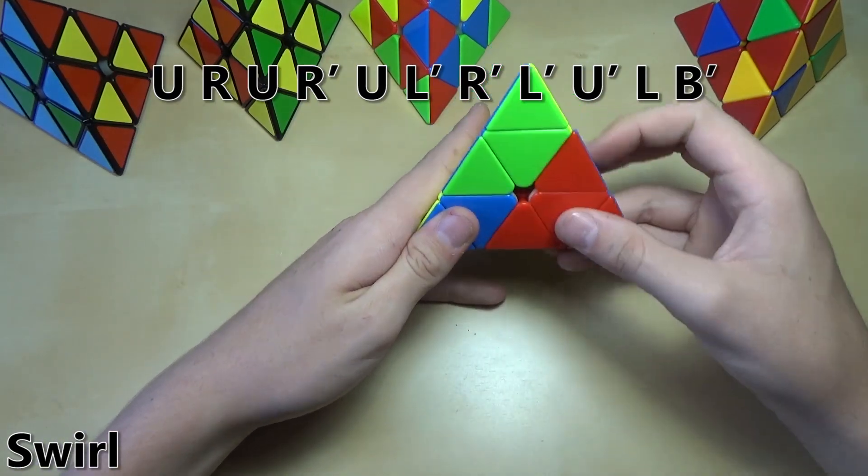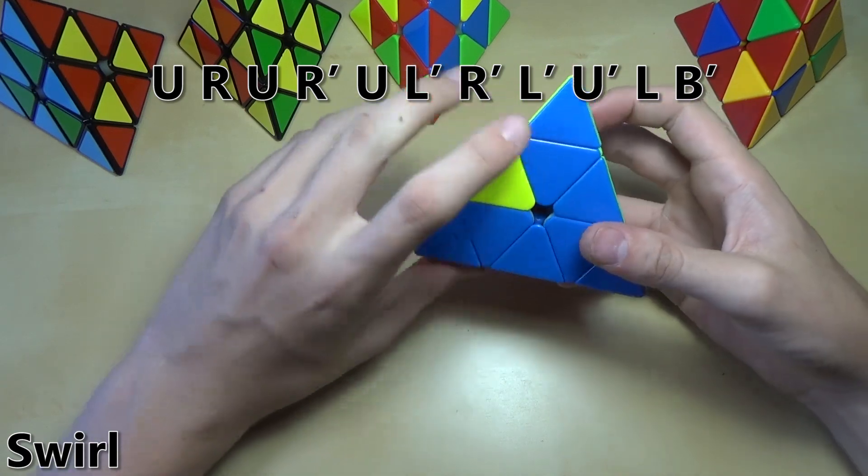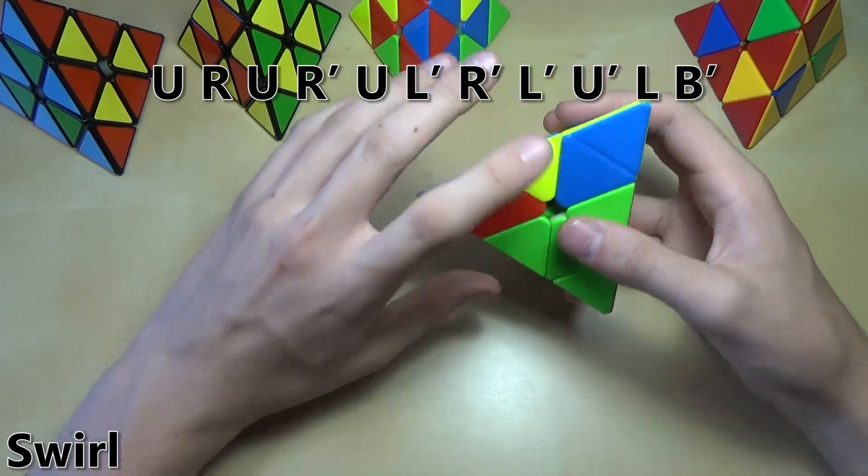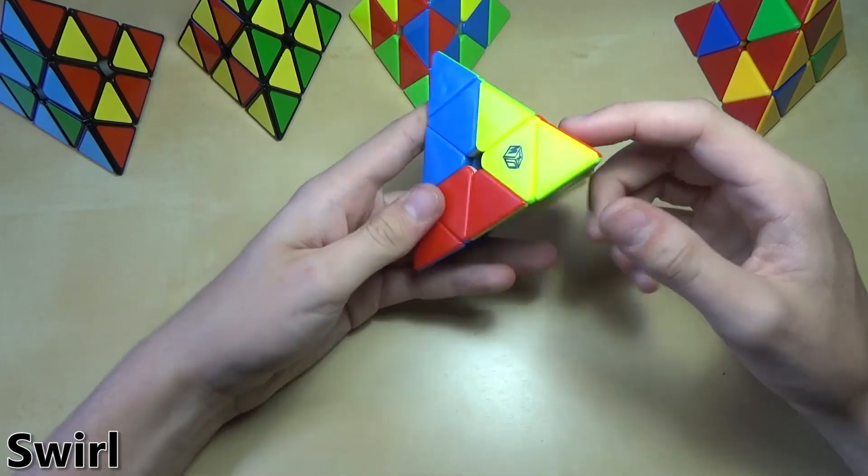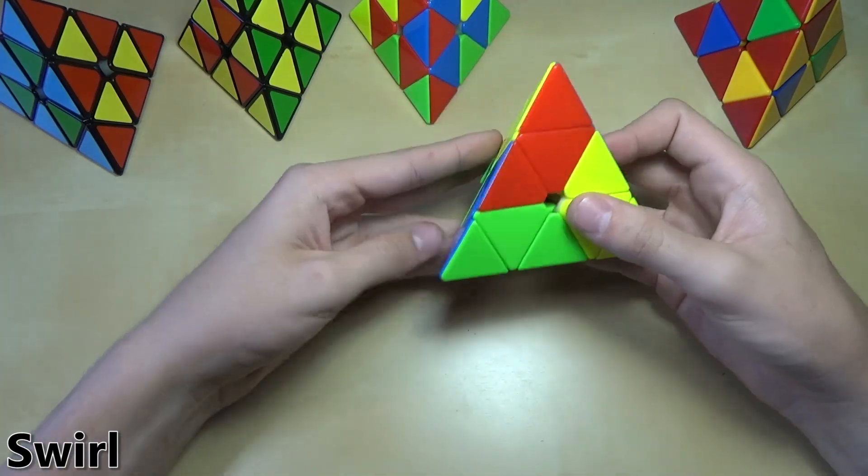Do U R U R prime U L prime R prime U prime U prime L B prime. And there we go. It's as simple as that. You now have the pattern.